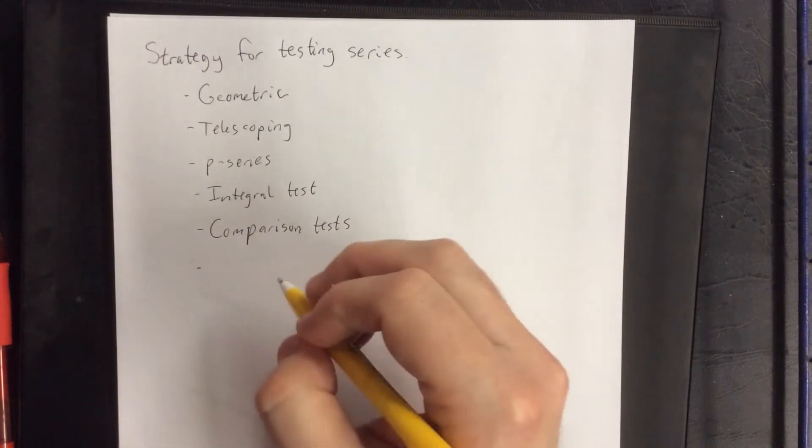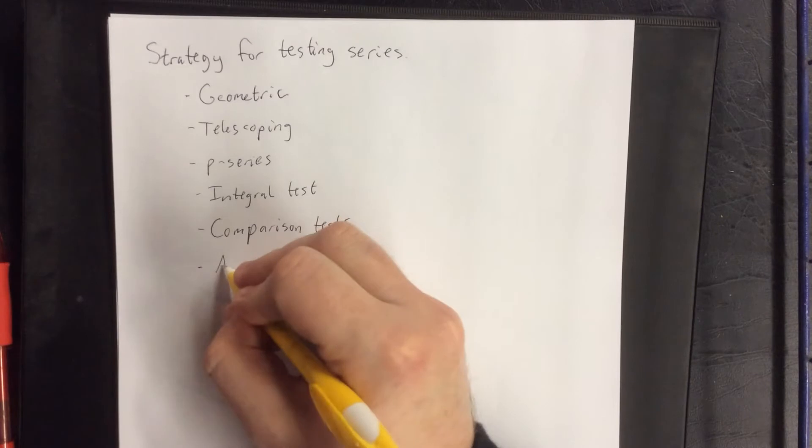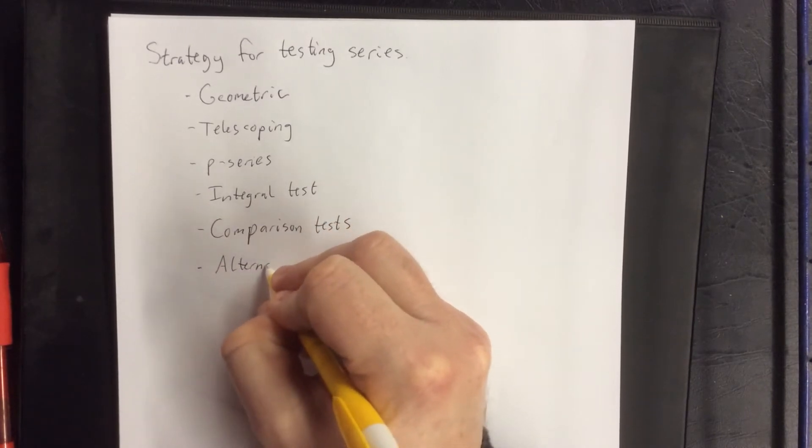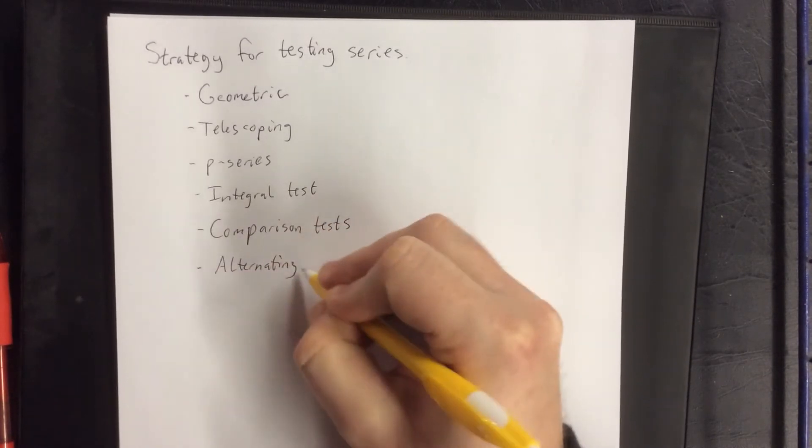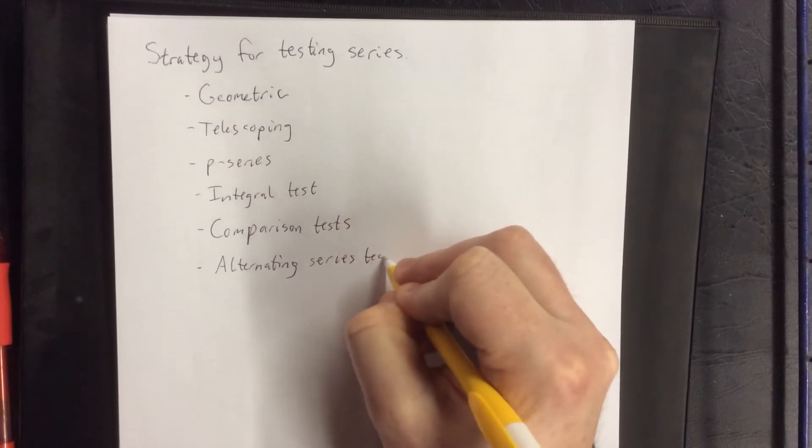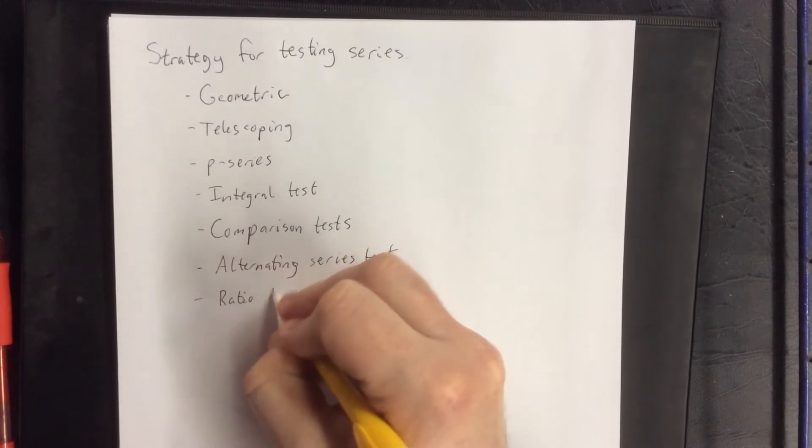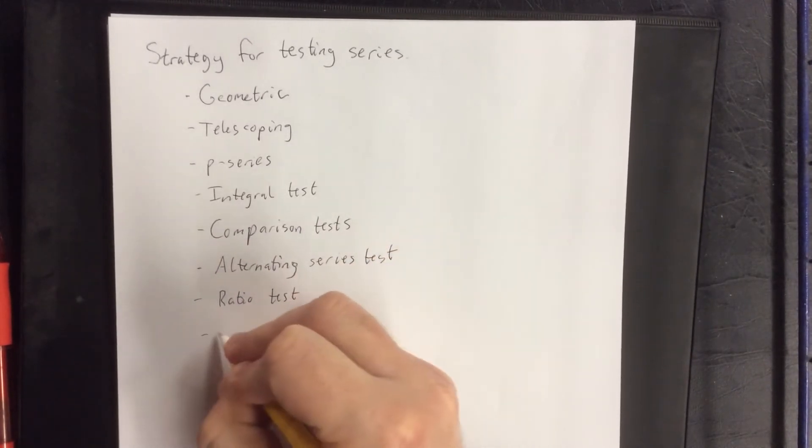After the comparison tests, we also had the alternating series test, we had the ratio test, and we had the root test.